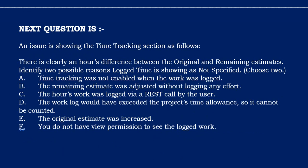Option B: the remaining estimate was adjusted without logging any effort. Option C: an hour's work was logged via the REST call by the user. Option D: the work log could have exceeded the project's time allowance, so it cannot be counted. Option E: the original estimate was increased. Option F: you do not have view permission to see original logged work.